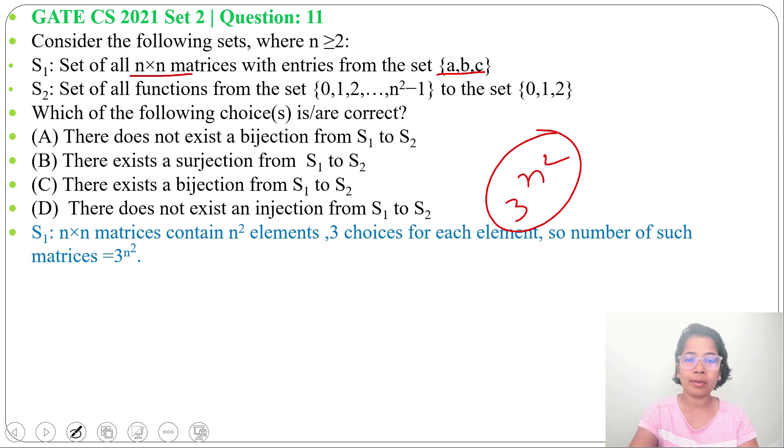Now S₂ is the set of all functions from the set {0,1,2,...,n²-1}. Here the cardinality will be n². That is set A. So |A| equals n² and |B| equals 3. It contains {0,1,2}.